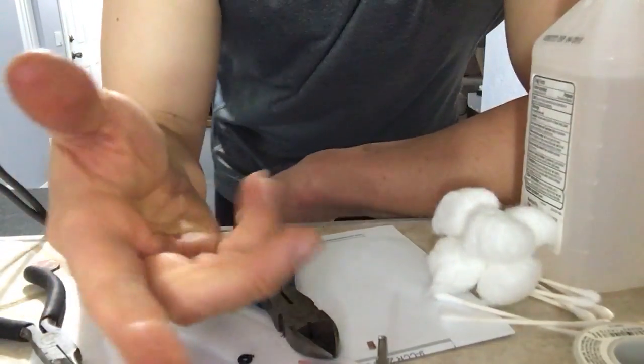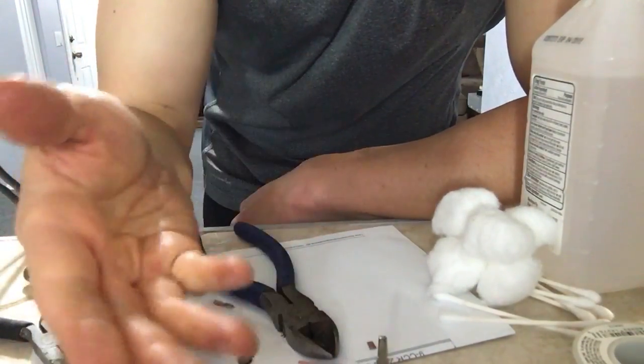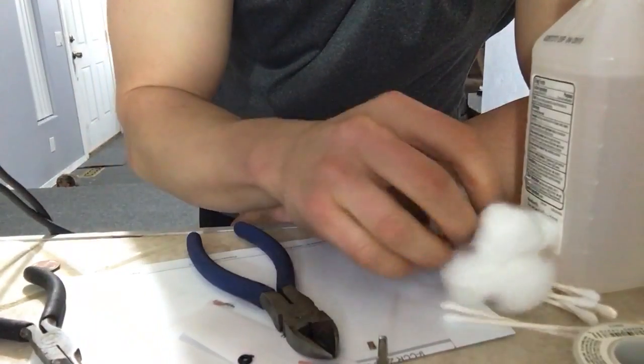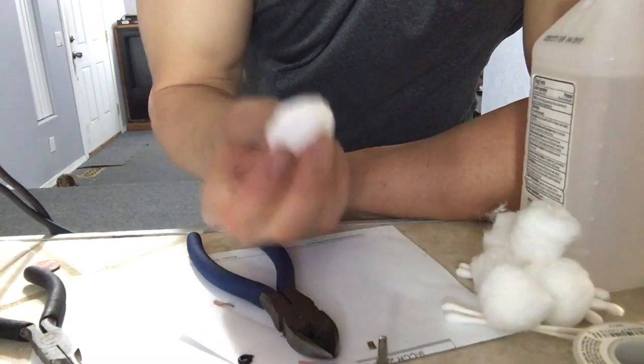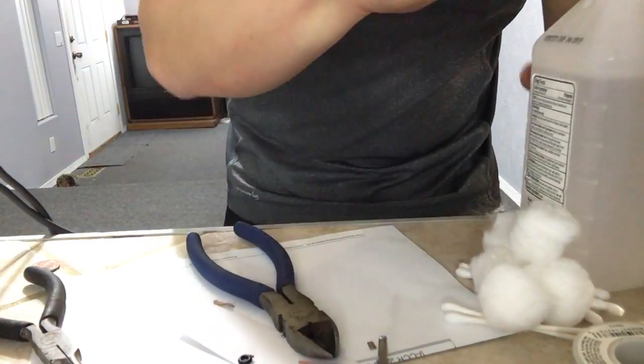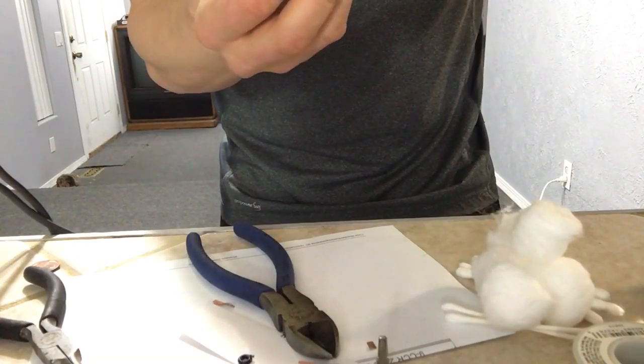Alright, so typically when I clean these things I usually take it to a sink and do soap and water and whatnot, but I'm just going to use rubbing alcohol and a cotton ball. That tends to clean it just as good.